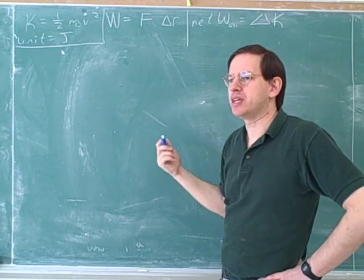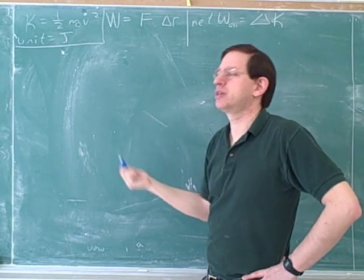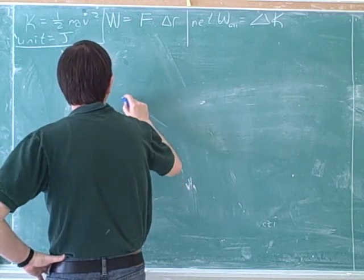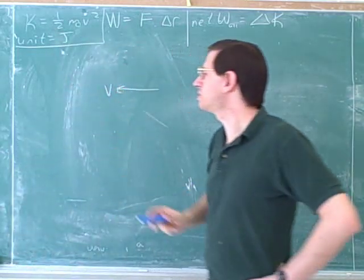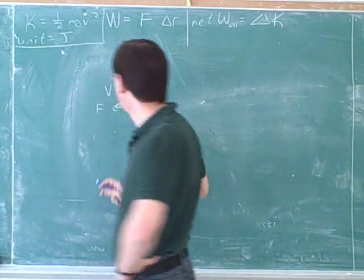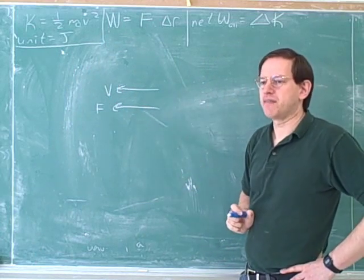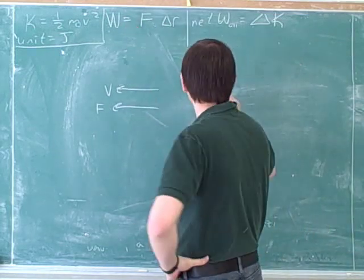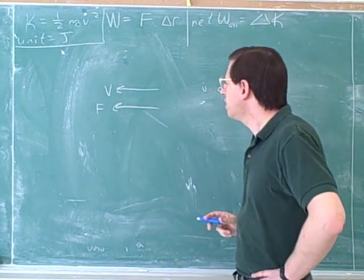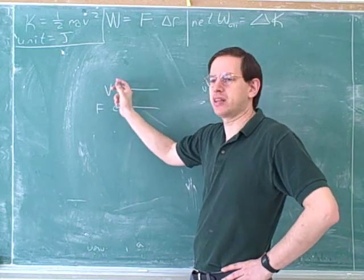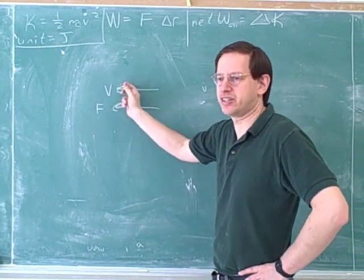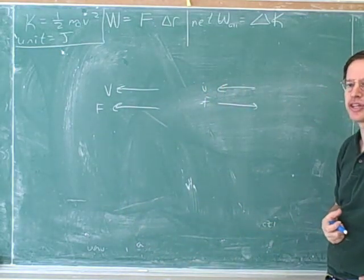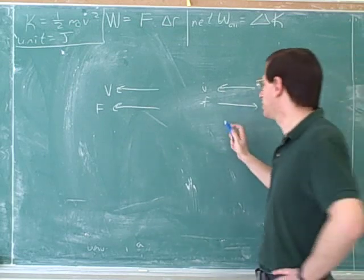Some types of forces change an object's speed, but some types change its direction. We only want to focus on the portion of the force that's changing the speed, not the direction. For example, suppose we have a force parallel to the velocity — this is going to change the object's speed. Is it going to speed the object up or slow it down? Speed it up. So it makes sense that this would be included as part of the work. Notice that even if the force is in what we might call the negative direction, it's still speeding the object up, because what matters is that the force is parallel to the velocity. If the force is anti-parallel to the velocity, that would tend to slow us down.